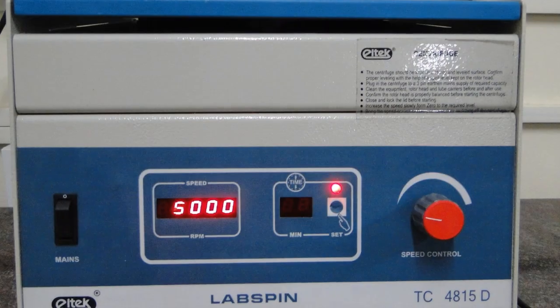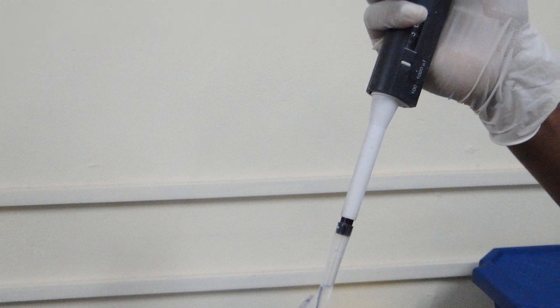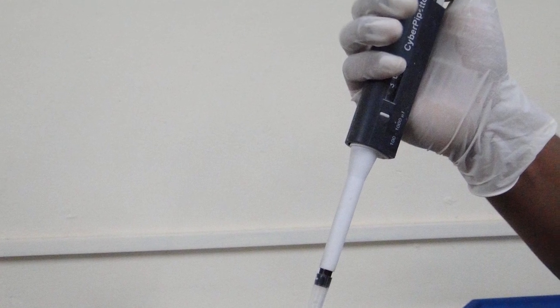Centrifuge it at 5000 RPM for 10 minutes. Transfer 300 microliters of the supernatant without disturbing the pellet to a new vial.